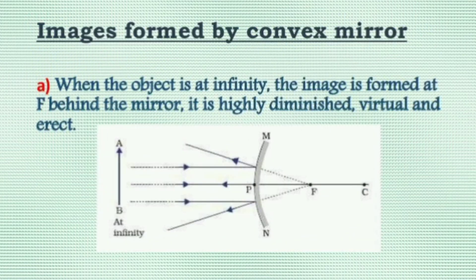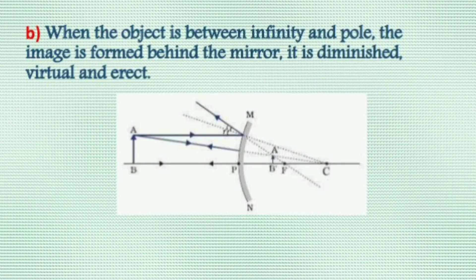Image formed by a convex mirror. Case one: object at infinity. In this case, the image is formed at focus F — it is virtual, erect, and highly diminished. Case two: object anywhere between infinity and pole P. In this case, the image is formed between pole P and focus F — it is virtual, erect, and diminished.